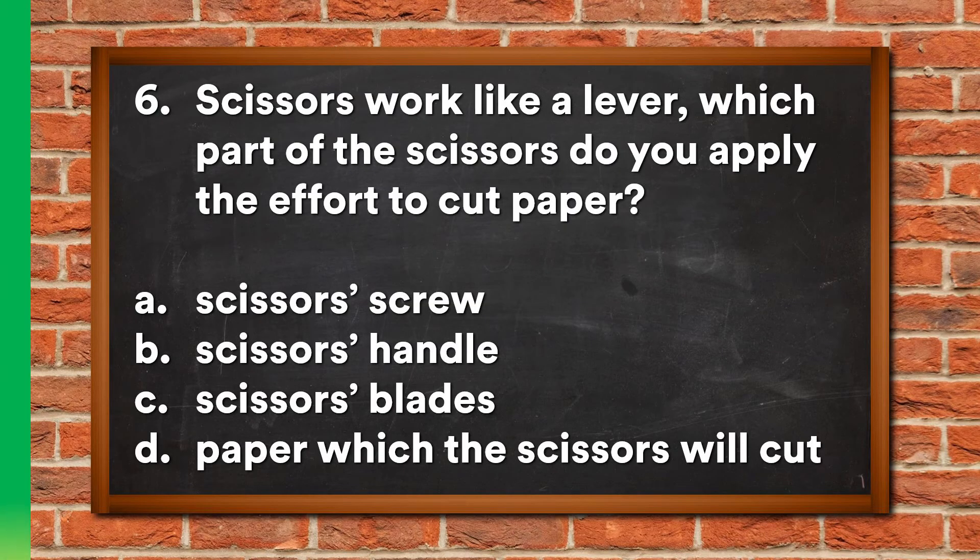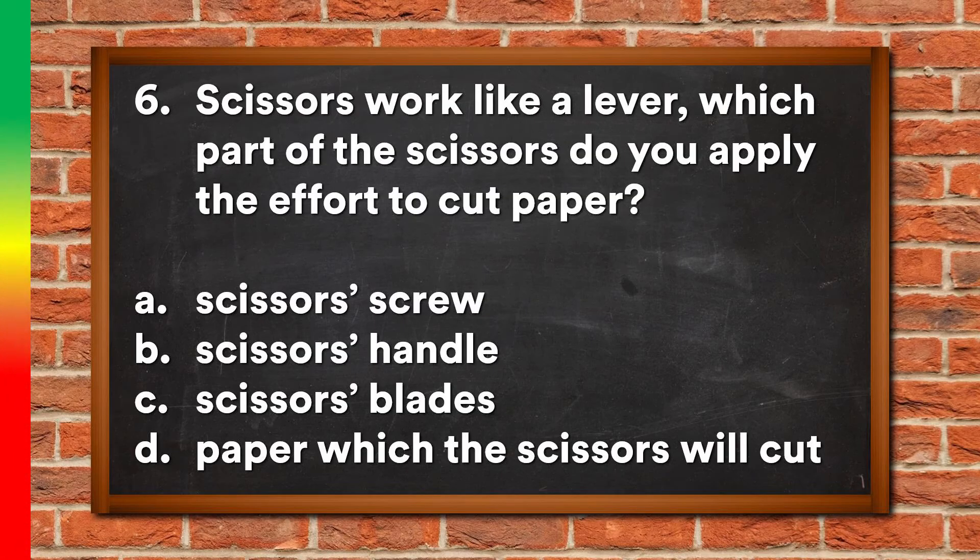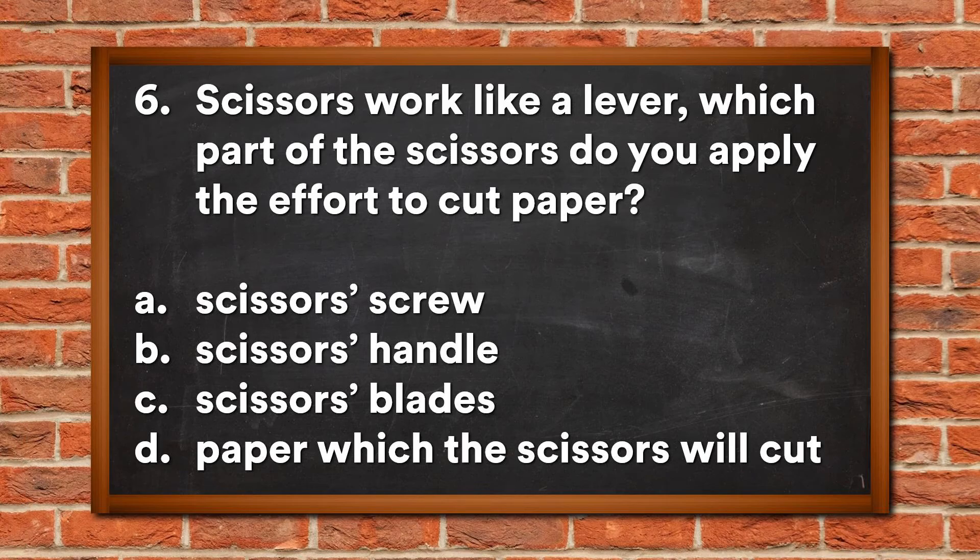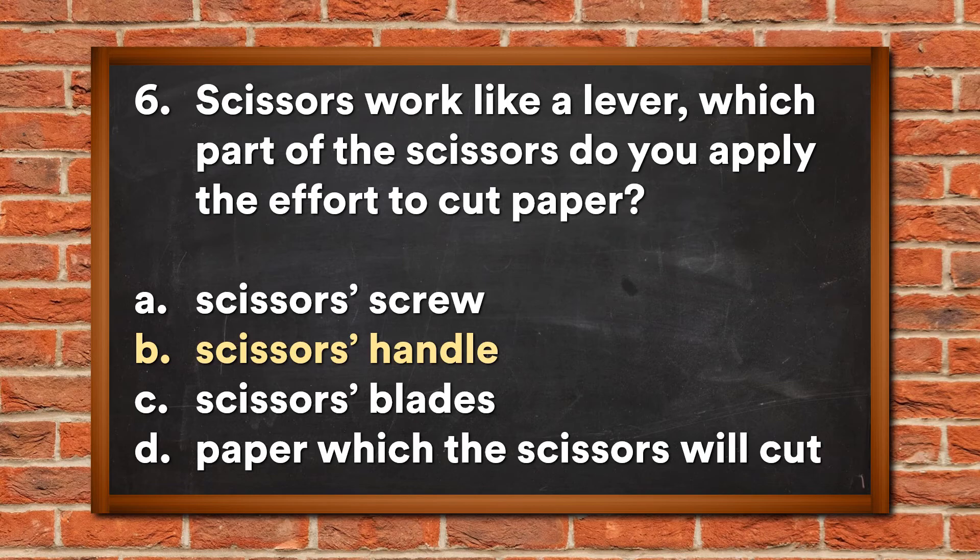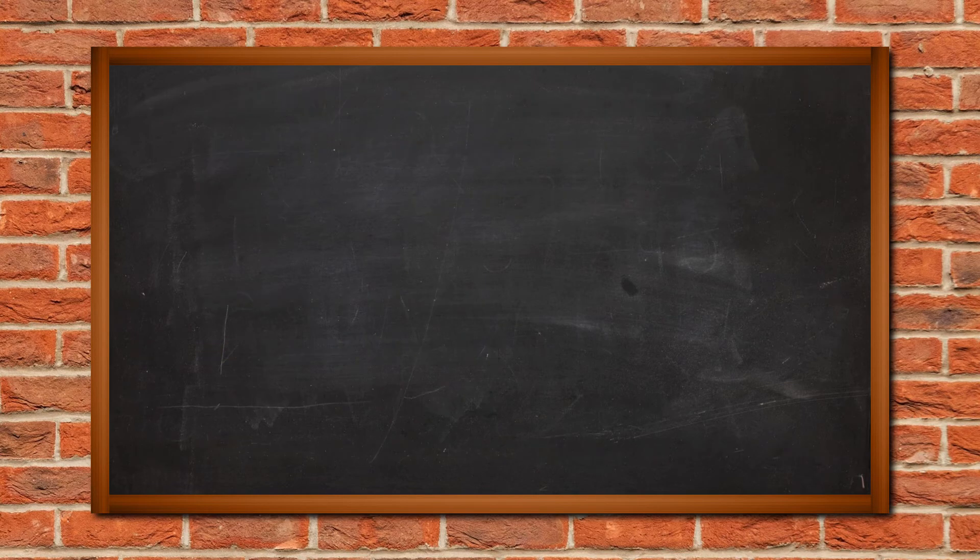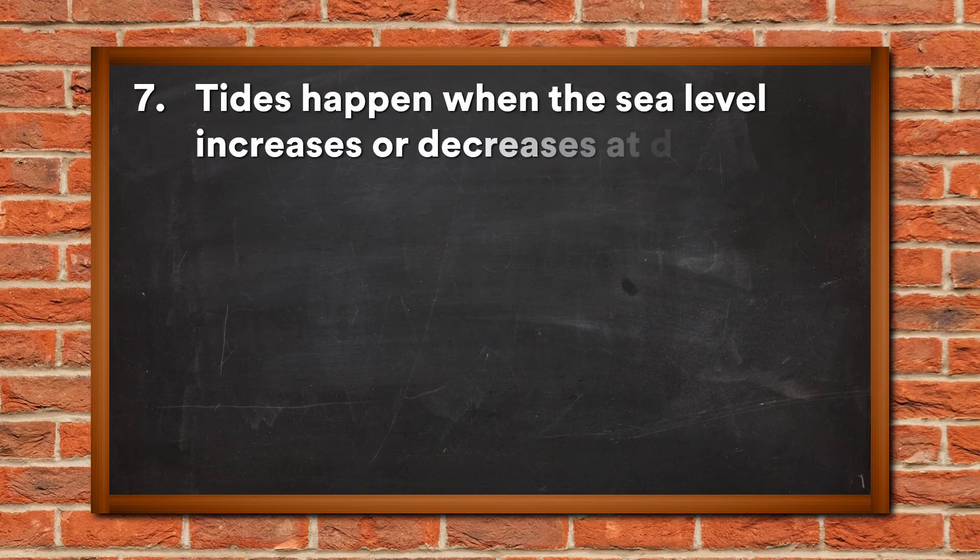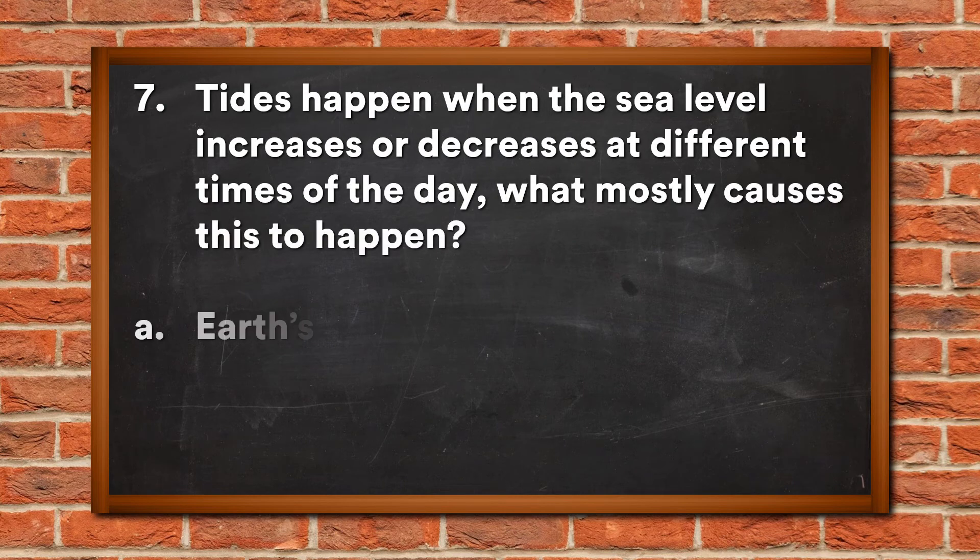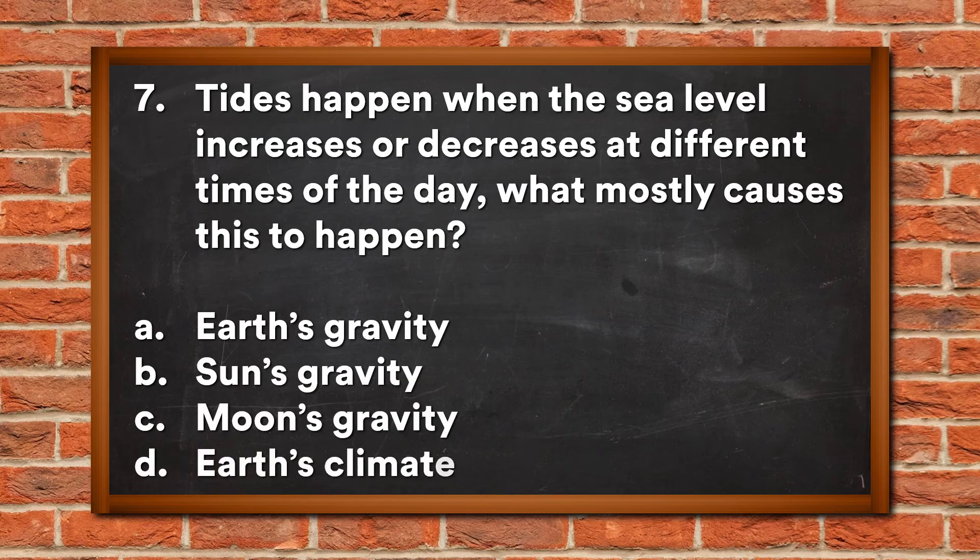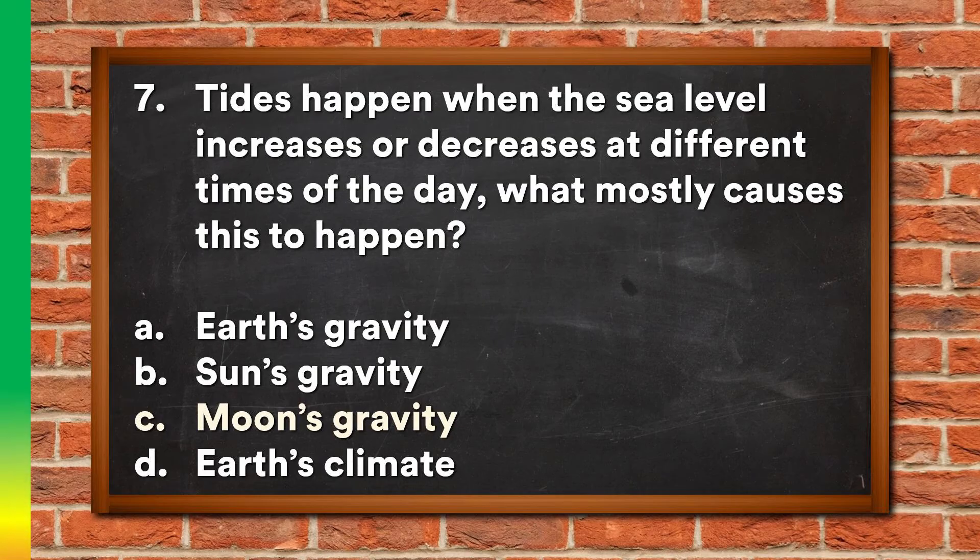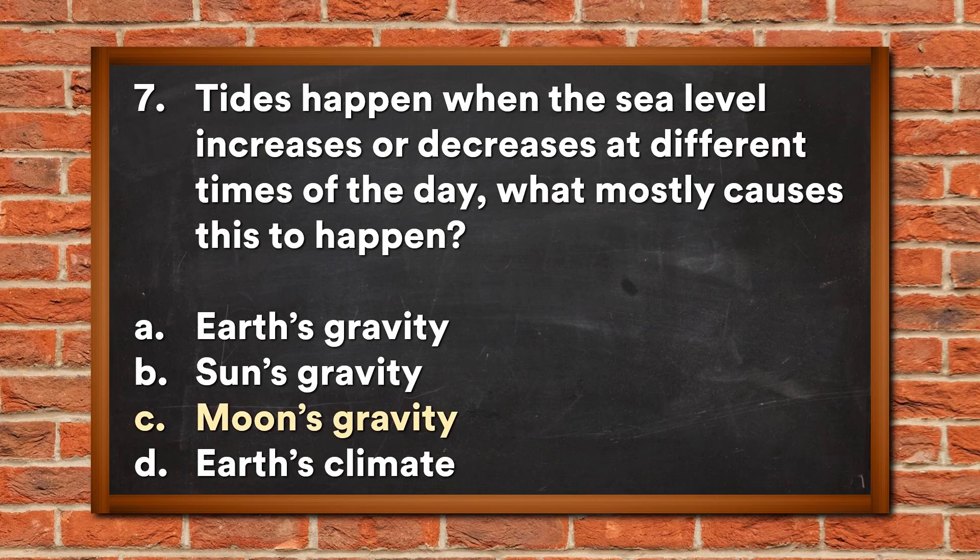Question 7: Tides happen when the sea level increases or decreases at different times of the day. What mostly causes this to happen? A. Earth's gravity, B. Sun's gravity, C. Moon's gravity, D. Earth's climate. The answer is C, Moon's gravity.